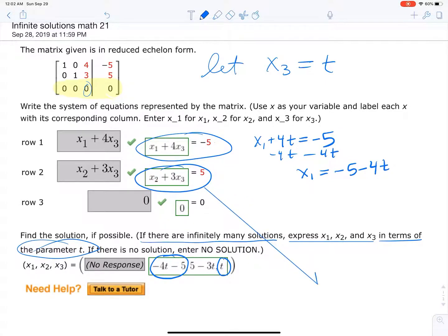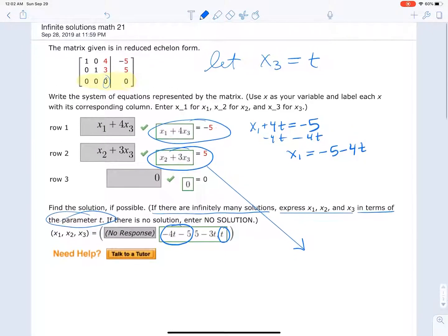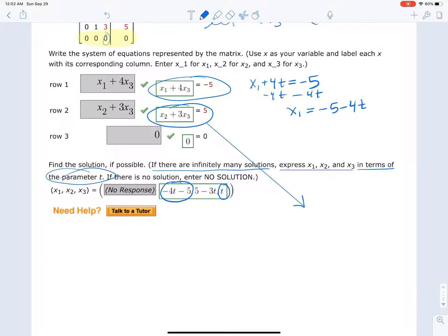So then lastly, with the second equation, if we take that equation and let x3 equal t, we get x2 plus 3t equals 5. We subtract 3t from both sides, you get x2 equals 5 minus 3t, which is there, right?